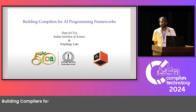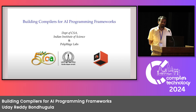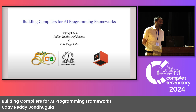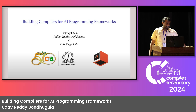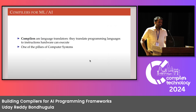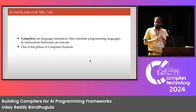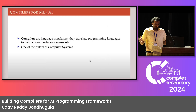This talk is on building compilers for AI programming frameworks, an extremely interesting and challenging area with lots of opportunities. Through this talk, I hope to give you a feel of what we have today, where this field is headed, and the opportunities and challenges in this area. Compilers are language translators that translate programming languages to instructions that hardware can understand. The first part covers what compilers for AI are and how they differ from traditional C and C++ compilers, and why we need new compiler infrastructure.